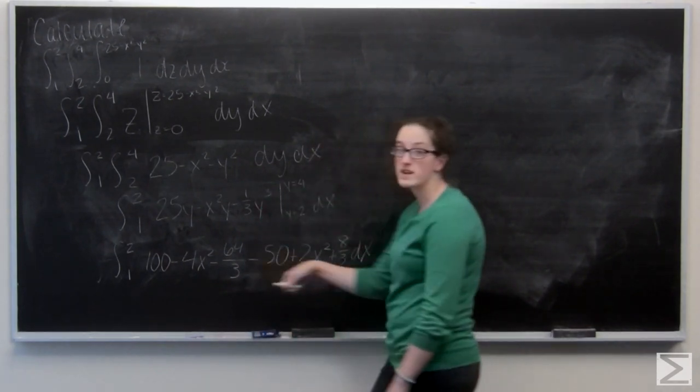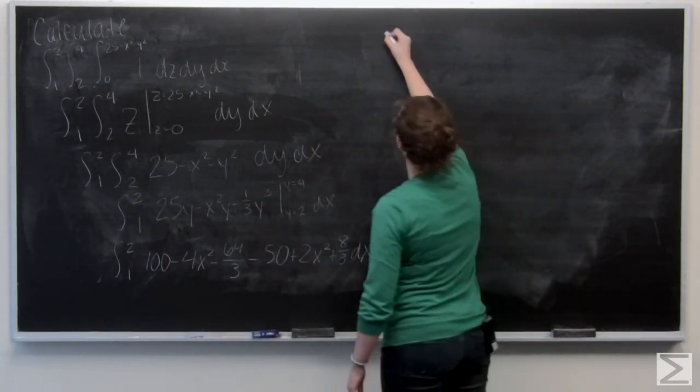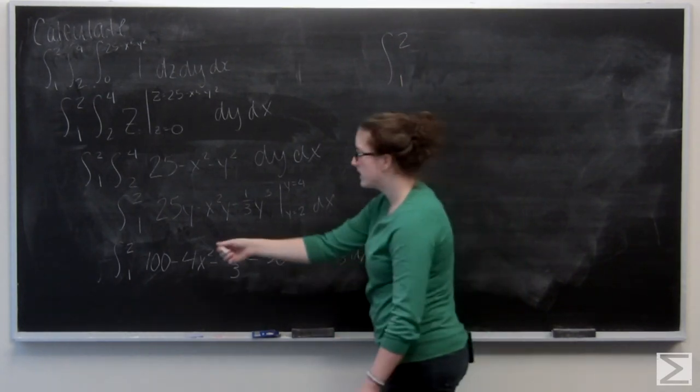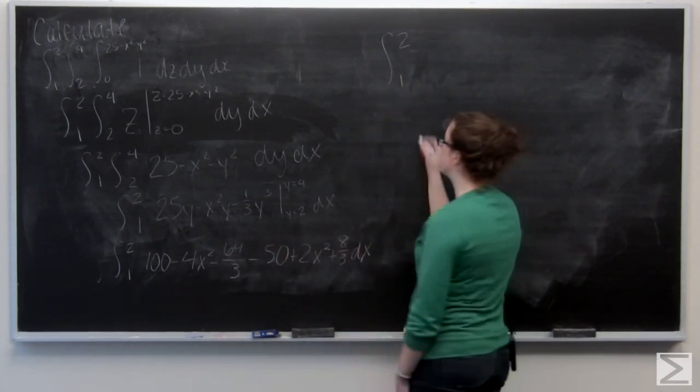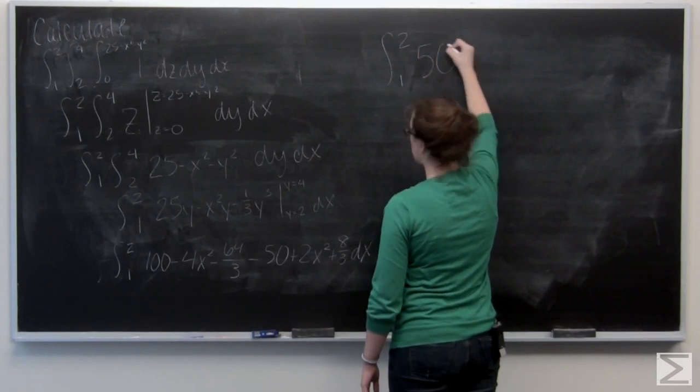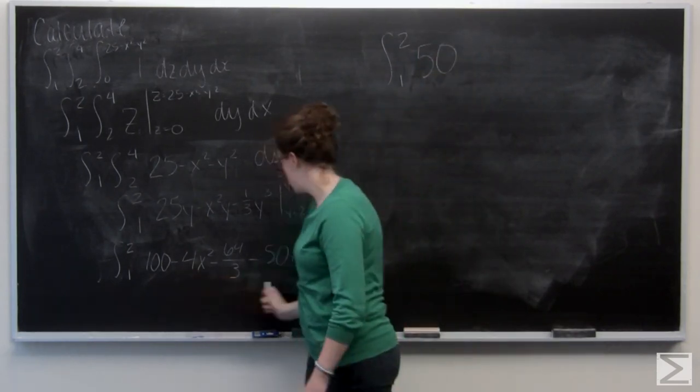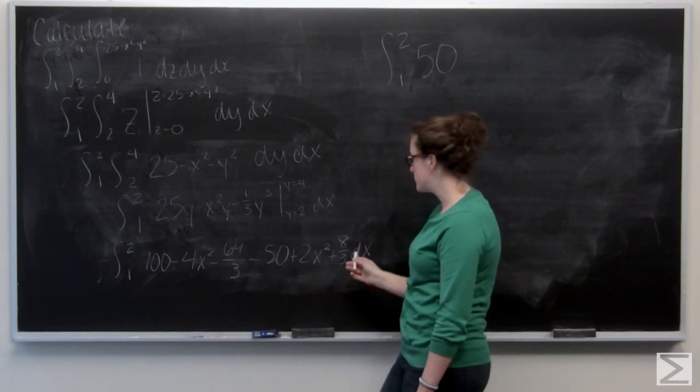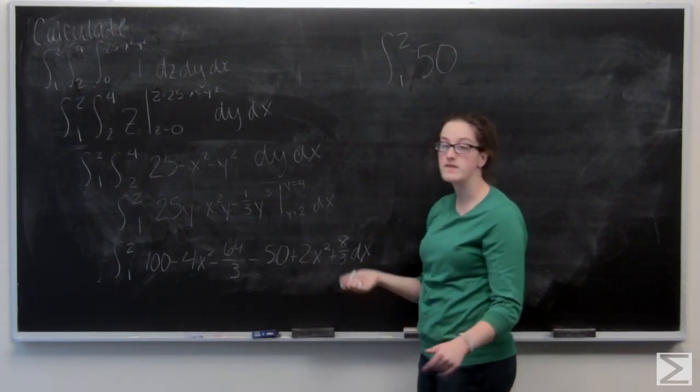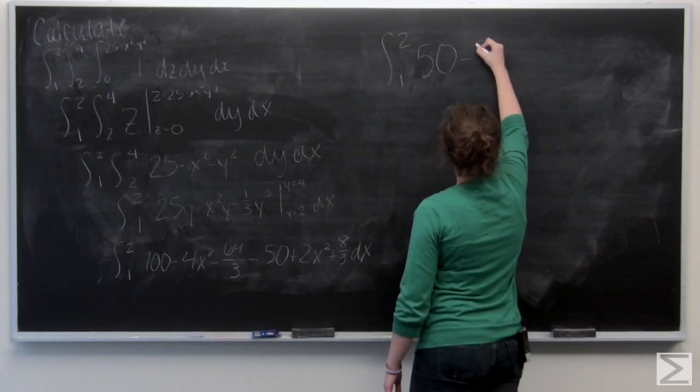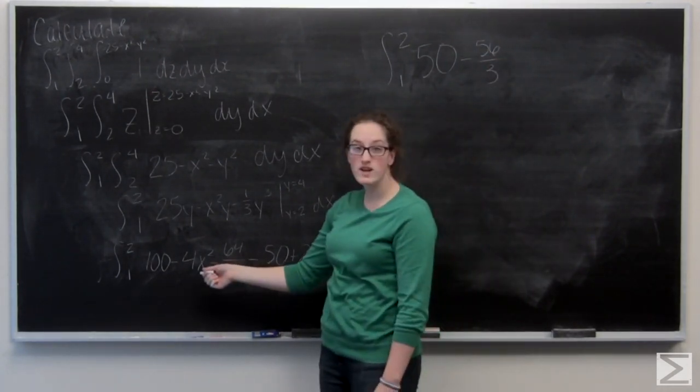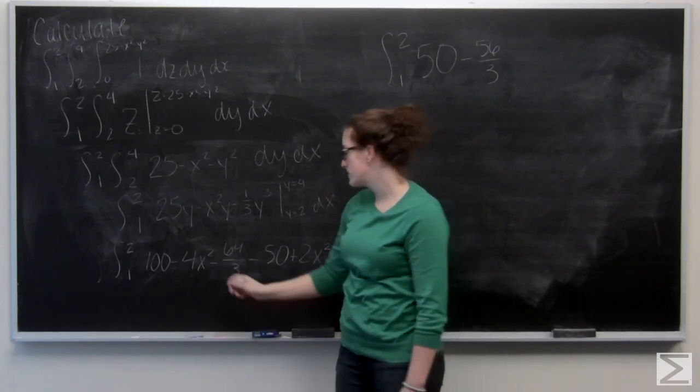I'm going to go ahead and combine these terms up here. 100 minus 50 is just going to be 50. Then the fractions: negative 64 thirds plus 8 thirds is going to be negative 56 thirds. And negative 4x squared plus 2x squared is negative 2x squared.